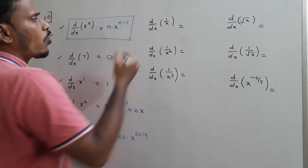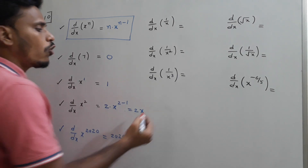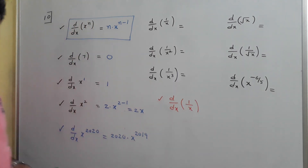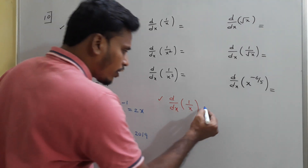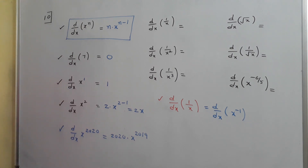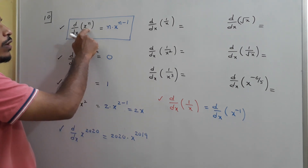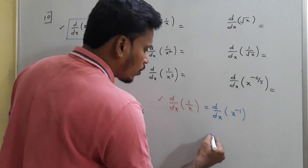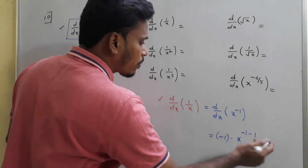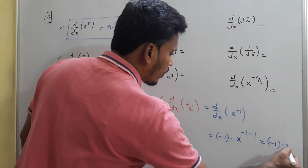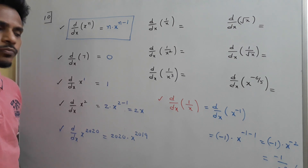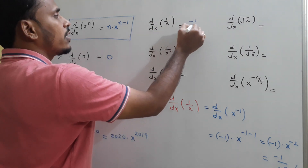Now find d/dx of 1/x. Rewrite 1/x as x^(-1). Comparing with x^n, n is -1. So the derivative is -1 times x to the power -1 minus 1, which is -1 times x^(-2), and on simplification the answer is -1/x².